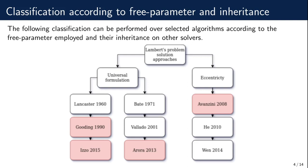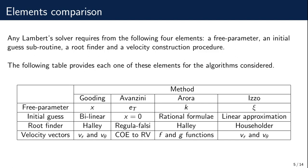A common set of elements can be identified in any Lambert's problem solver: the free parameter, the initial guess, the root solver, and the way in which the velocity vectors are constructed. The table in this slide shows these elements for each algorithm. Gooding's free parameter is a universal formulation variable x, associated with elliptic orbits for x below 1, parabolic orbits when x equals 1, and hyperbolic ones when x is greater than 1. For Avanzini's algorithm, the free parameter is the transverse eccentricity component, while the other component — parallel to the chord of the problem — is constant regardless of the geometry.